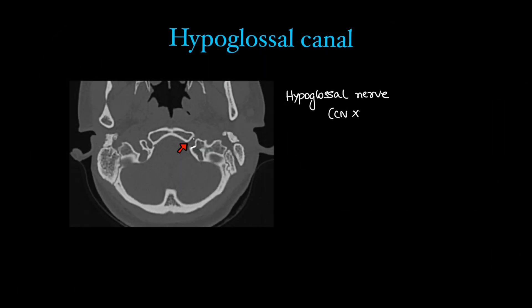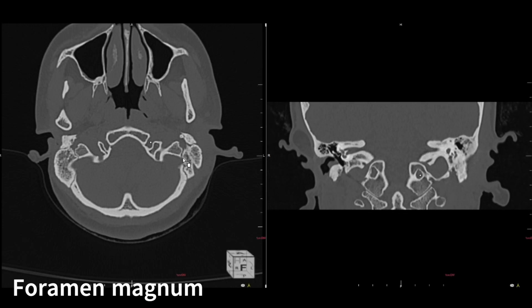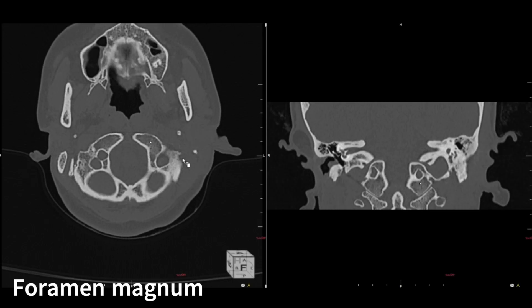Contents of the hypoglossal canal: the hypoglossal nerve, which is the last cranial nerve (CN XII), and the meningeal branch of the ascending pharyngeal artery passing through this foramen. The last foramen is the very obvious foramen magnum at the base of the skull.